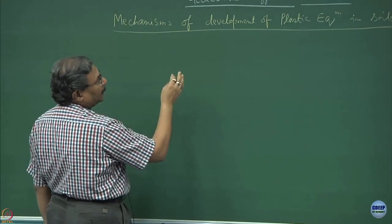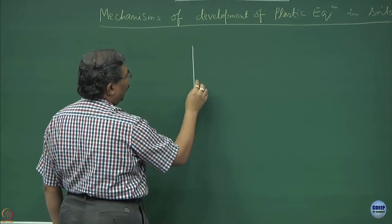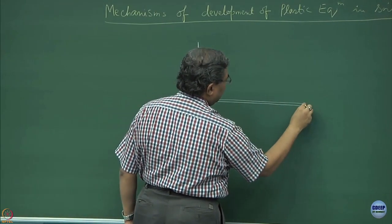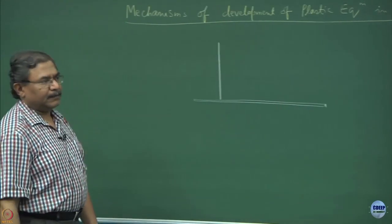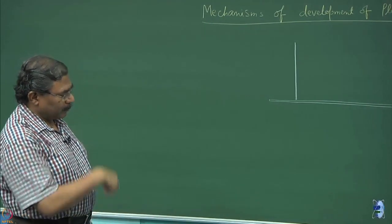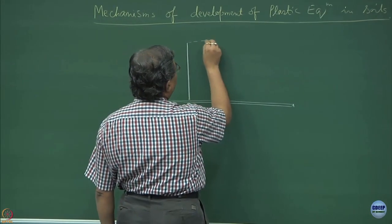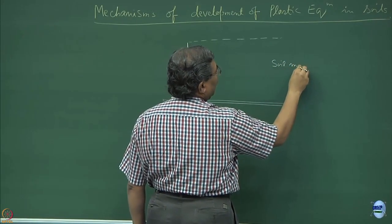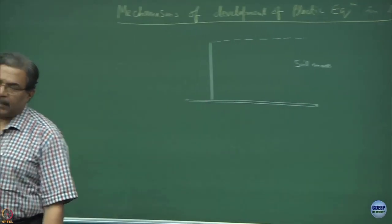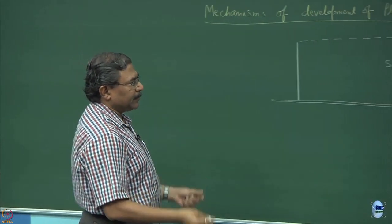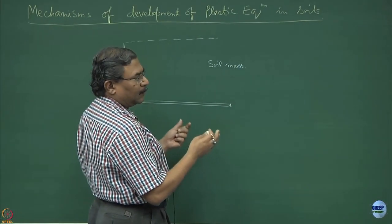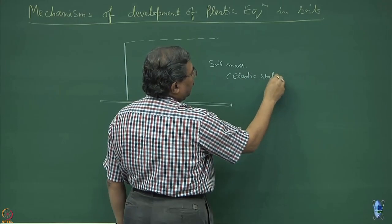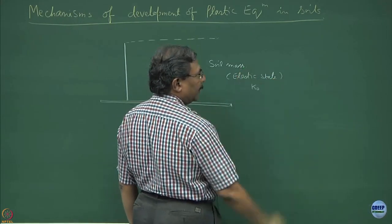The best way to understand the mechanisms is to consider a box resting on a horizontal surface, made up of perspex — a plastic sheet which will not offer any friction. This is the top of the box, where I am filling up the soil mass. The sample is created by a sedimentation process or by very slow, controlled packing, which represents the elastic state, and we have quantified that state as K0, at rest.